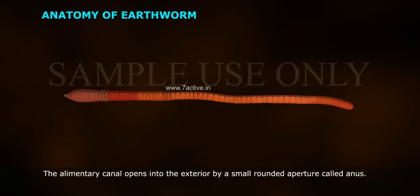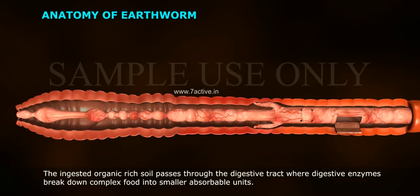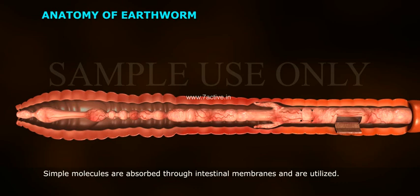The alimentary canal opens to the exterior by a small rounded aperture called the anus. The ingested organic-rich soil passes through the digestive tract where digestive enzymes break down complex food into small absorbable units. Simple molecules are absorbed through intestinal membranes and are utilized.